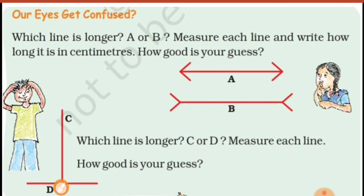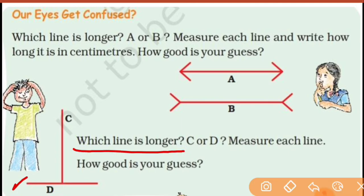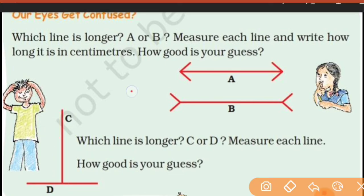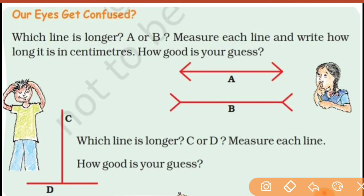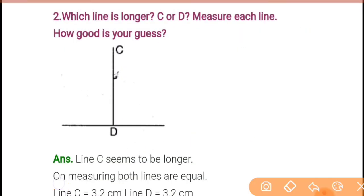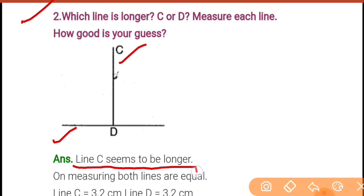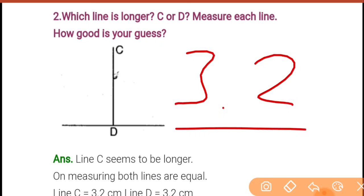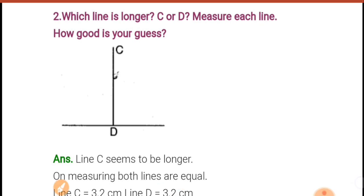Next, question number 2: which line is longer? Again you have two lines — line D and line C. Line D is horizontal and line C is vertical. You have to guess which line is longer. I myself got confused and thought line C is longer, but when I measured with a scale, both lines are the same. Line C seems longer, but on measuring, both lines are equal. Line C is 3.2 cm and line D is also 3.2 cm.